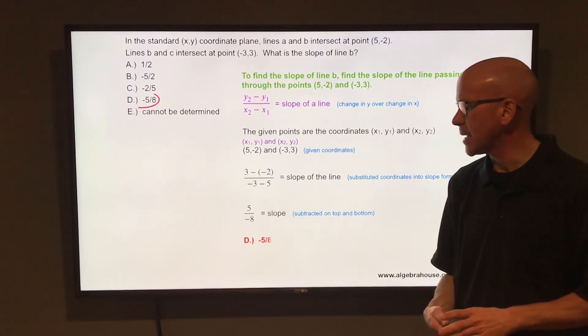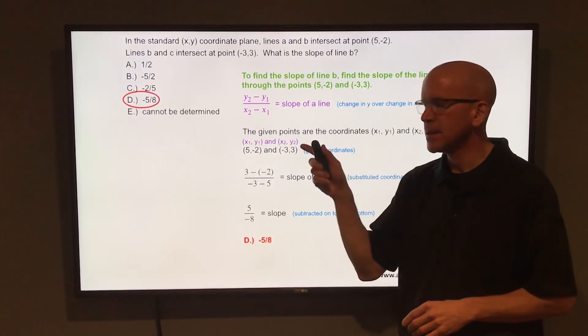More importantly, the slope of this line B is negative 5 eighths, and that is letter D.